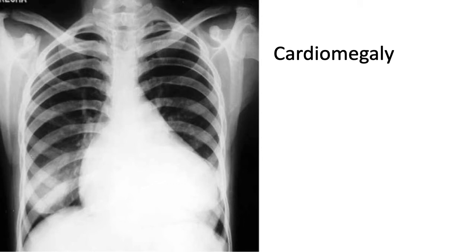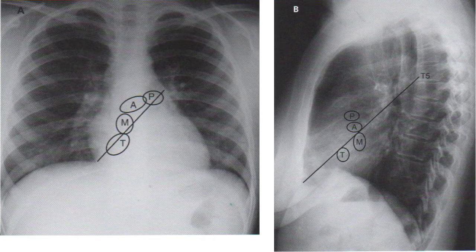This is an example of cardiomegaly — very easy to diagnose because of the enlargement of the heart. This is just to remember the anatomical position of the valves. Remember we have four chambers in the heart and four valves: tricuspid, mitral, aortic, and pulmonary valve.